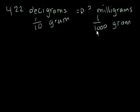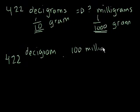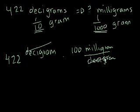Well, a milligram, as we see here, is 100 times smaller. To go from 1 tenth to 1 over 1 thousand, you have to decrease in size by 100. So we could just say 422 decigrams times 100 milligrams per decigram. And then the decigrams will cancel out. And now I'll get, what is it? 422 times 100. That's 42,200 milligrams.